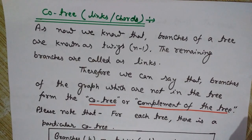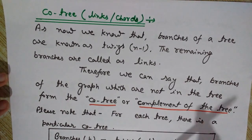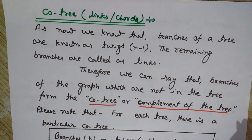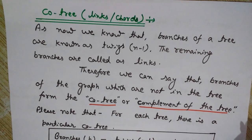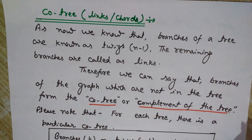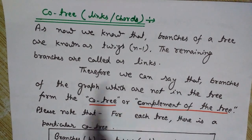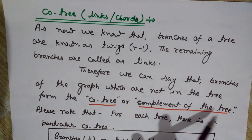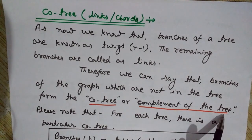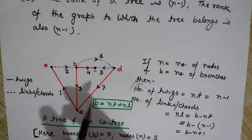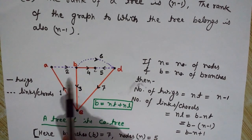Now we will understand the concept of co-tree. Branches in a tree are called twigs and their count is n minus 1. The remaining branches of the graph that are not in the tree are known as links. Links are the branches of the co-tree. Therefore, the co-tree is the complement of the tree — it is formed by the branches of the graph which are not part of the tree.